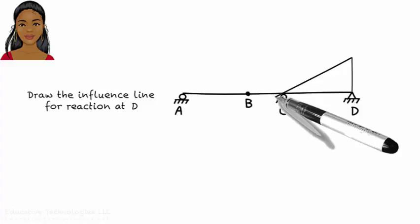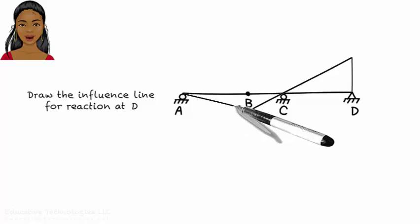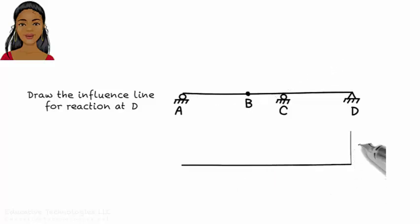If we push D up, given that C cannot move, it can only rotate, then B has to move down, like this. But is this configuration possible? Does the adjacent bar permit B to move down? The answer is yes. Since A can rotate, bar AB turns clockwise to accommodate the downward movement of B. So here's the influence line for reaction at D.